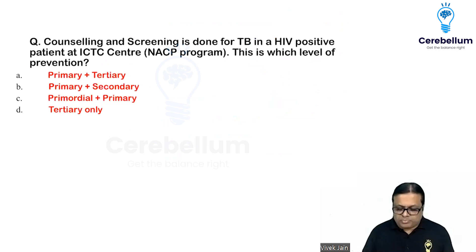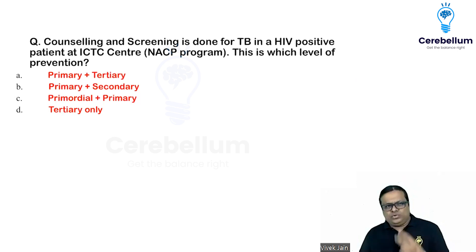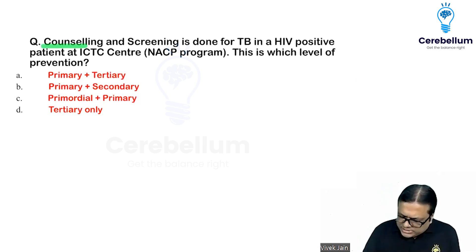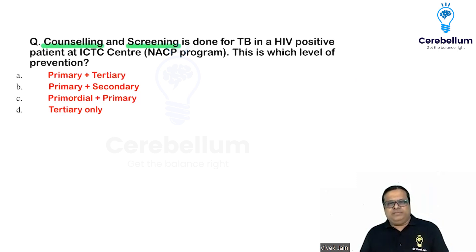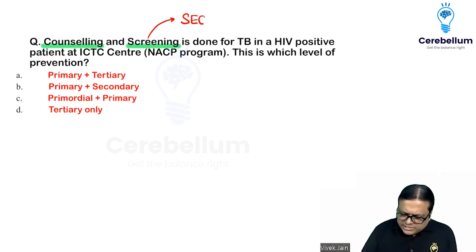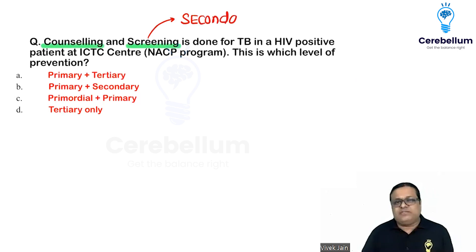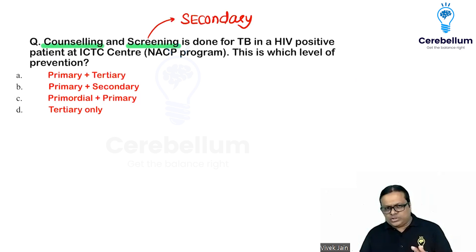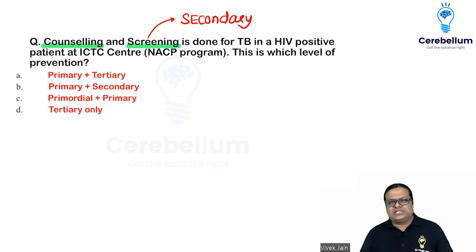This is an exam question that combines two different things: counseling and screening for TB in an HIV positive patient at an ICTC center. Screening is early detection — secondary level of prevention. Tuberculosis is the most common opportunistic infection of HIV in India, so if an HIV positive patient comes to you, you are screening to detect TB.